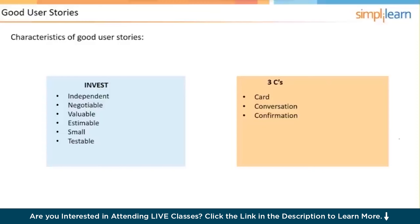The Three C's of a user story: the first C is Card - user stories should be able to be written on a 4x6 inch index card or similar media. The second C is Conversation - the user story card is the item used for the team and product owner to talk and discuss, ensuring they are on the same page about what is actually supposed to be developed. The third C is Confirmation - each user story must have acceptance tests, which are used during the sprint review to confirm it is acceptable.